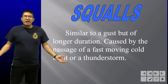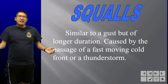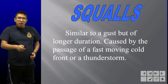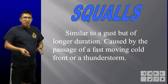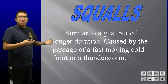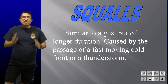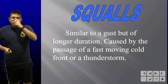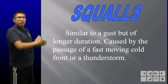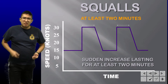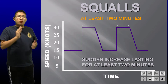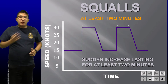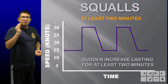Squalls are essentially a gust — a sudden change in direction or speed — but the main difference between a squall and a gust is that a squall lasts longer. It changes dramatically and stays there for a while. This is usually caused by the passage of a fast-moving cold front or a thunderstorm. Squalls have to last at least two minutes, so if the sudden change in wind direction or speed lasts for more than two minutes, then it's a squall.